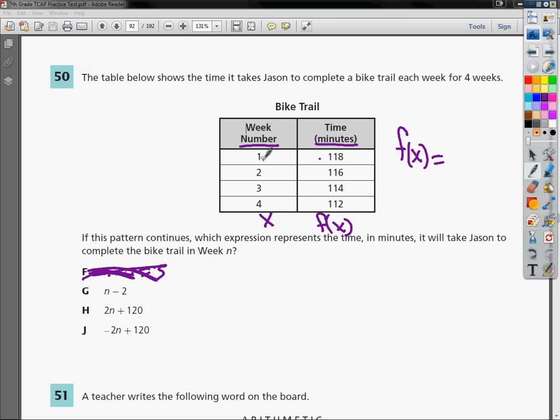g's the same way. 1 minus 2 is negative 1. He can't have done it in negative 1 minutes. That makes no sense. So that's out.